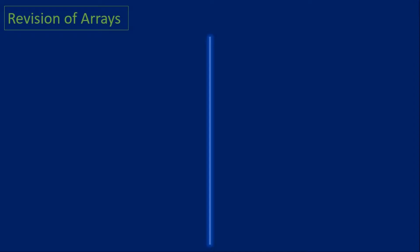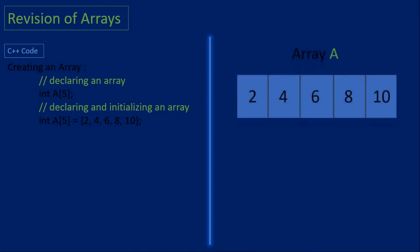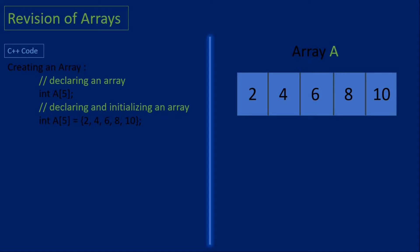Since this is an array implementation of the stack, let's have a quick revision of arrays. To create an array, you first need to define the type of elements you want to store. In this case we're storing integer elements in an array we'll call 'a', and we declare the size of the array in the brackets. We can declare and initialize an integer array that can store five items with elements two, four, six, eight, and ten.